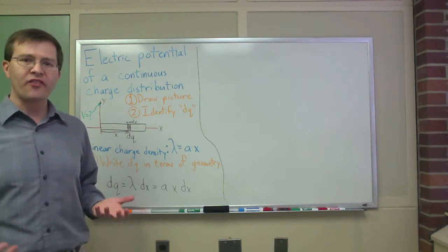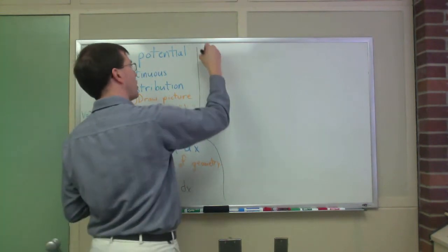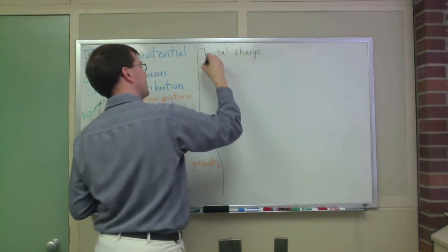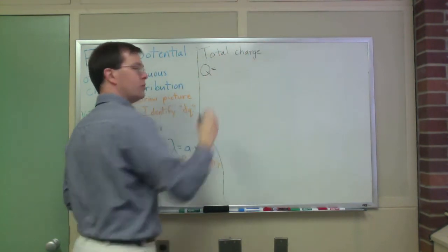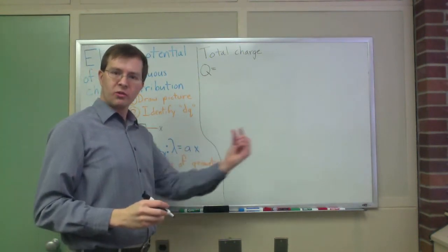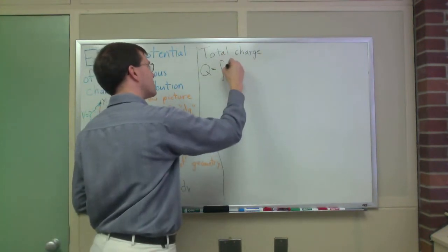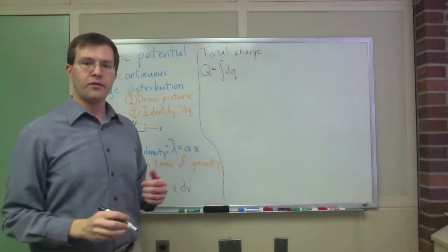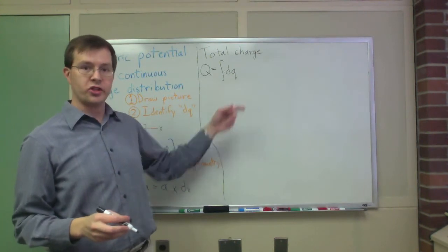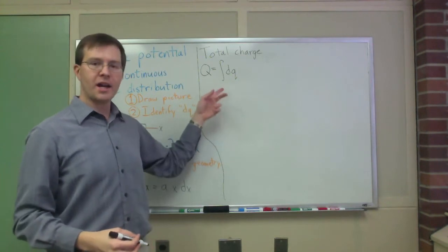What is the total charge on this entire rod? How do we do that? Simple enough, you add it up. So the total charge on the rod we'll call capital Q. Capital Q is the total charge on my rod, and we do it just by summing over all the individual pieces of charge. In continuous calculus language, a sum means an integral. This is integral of dq.